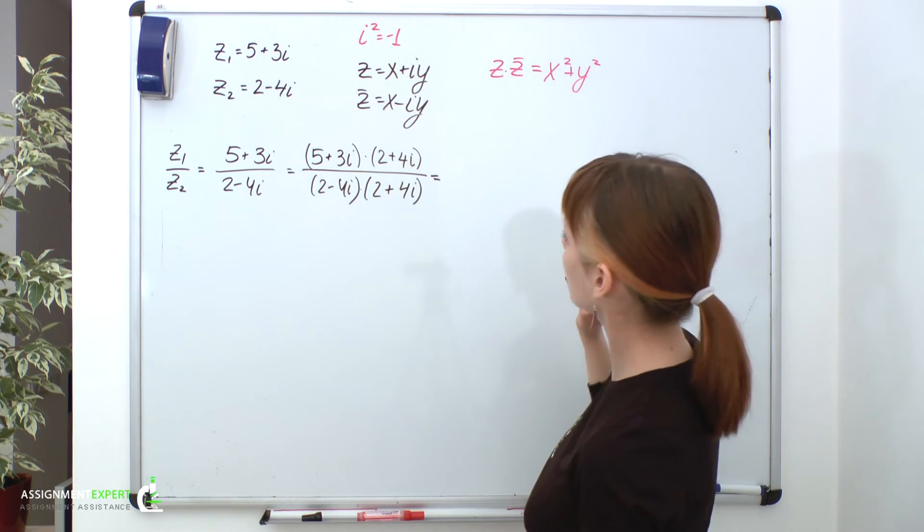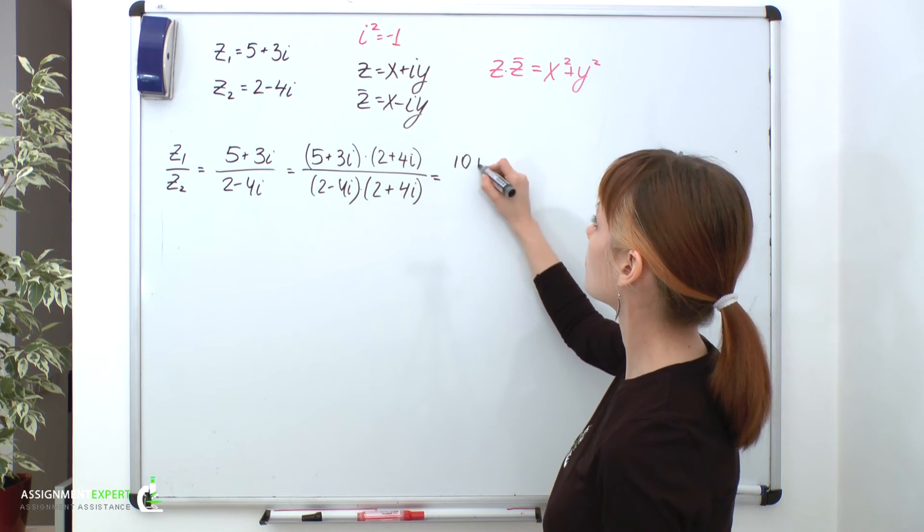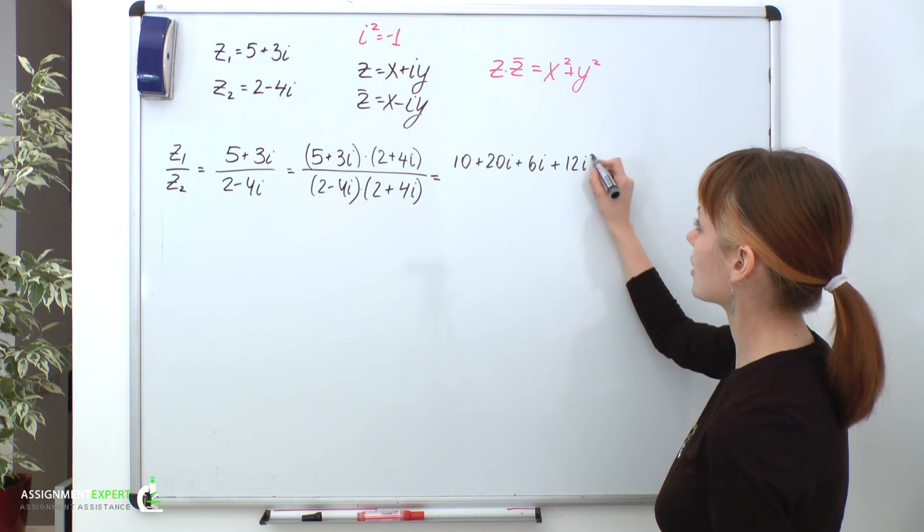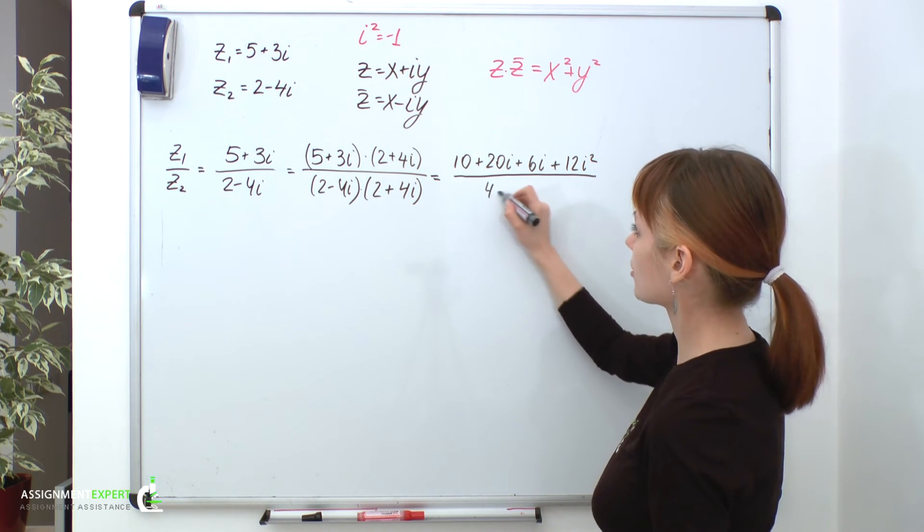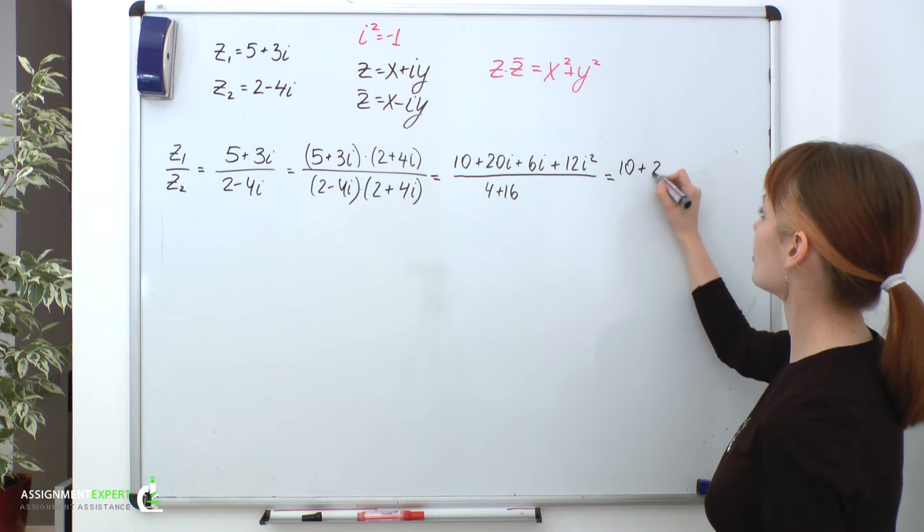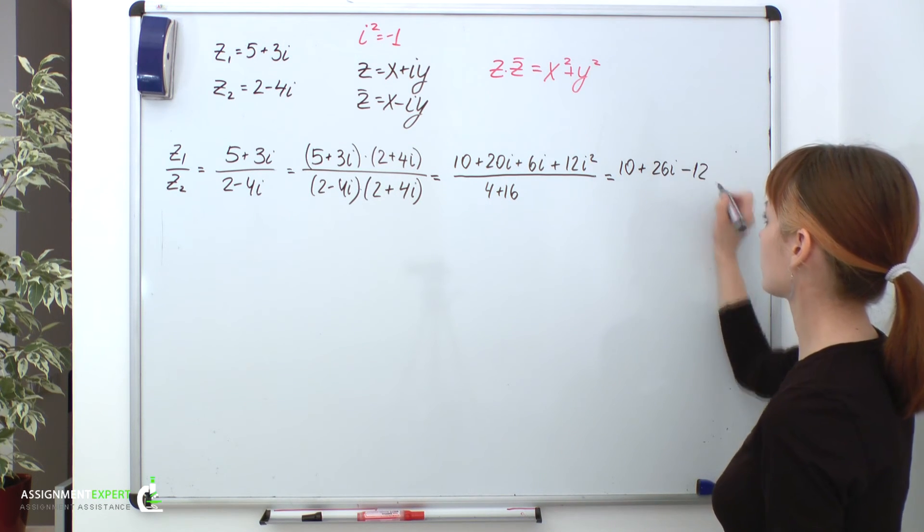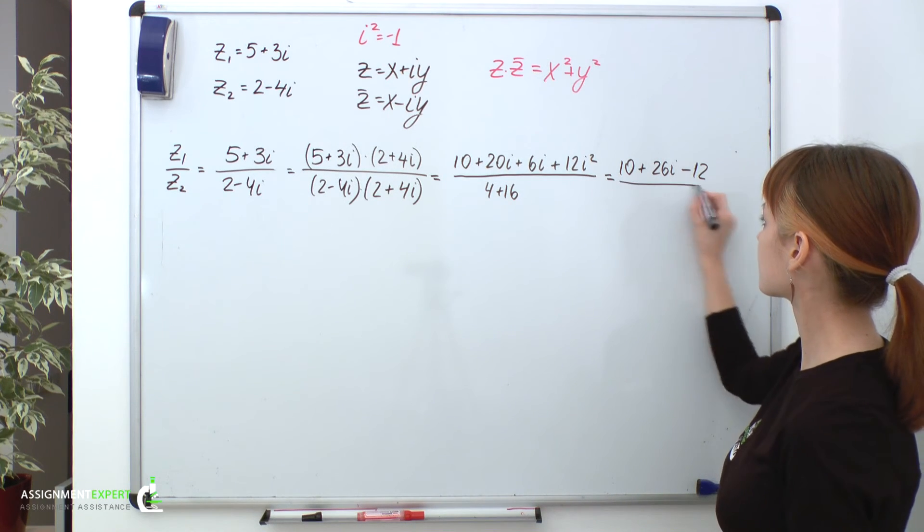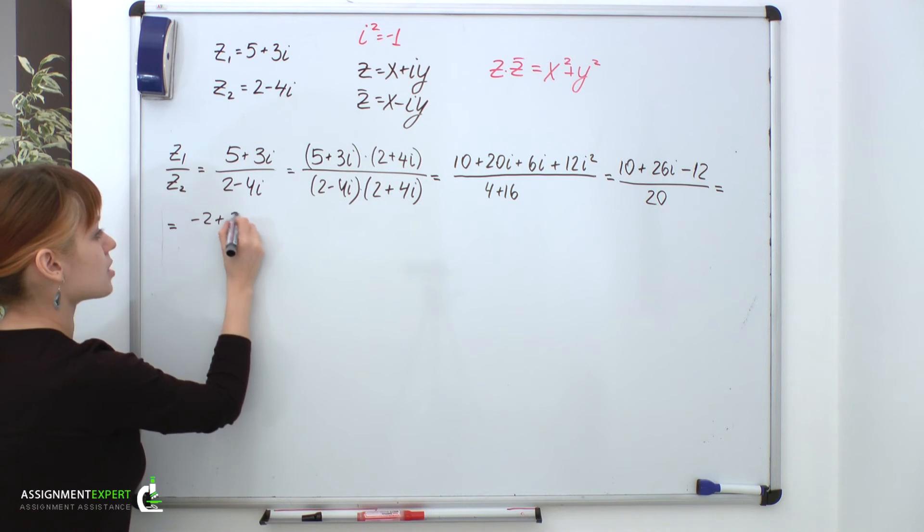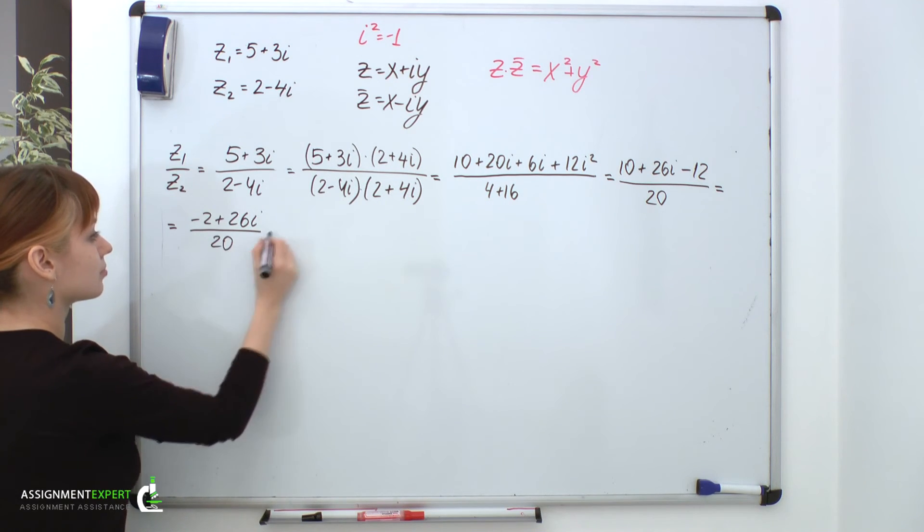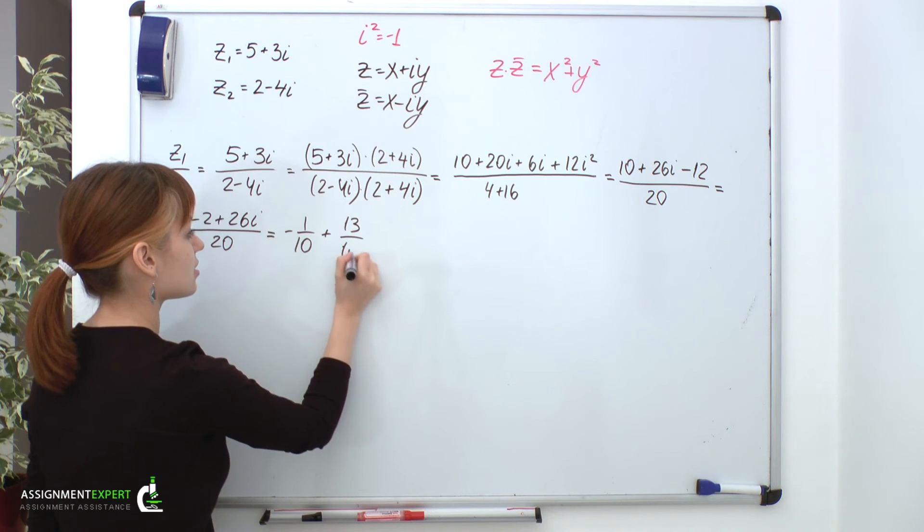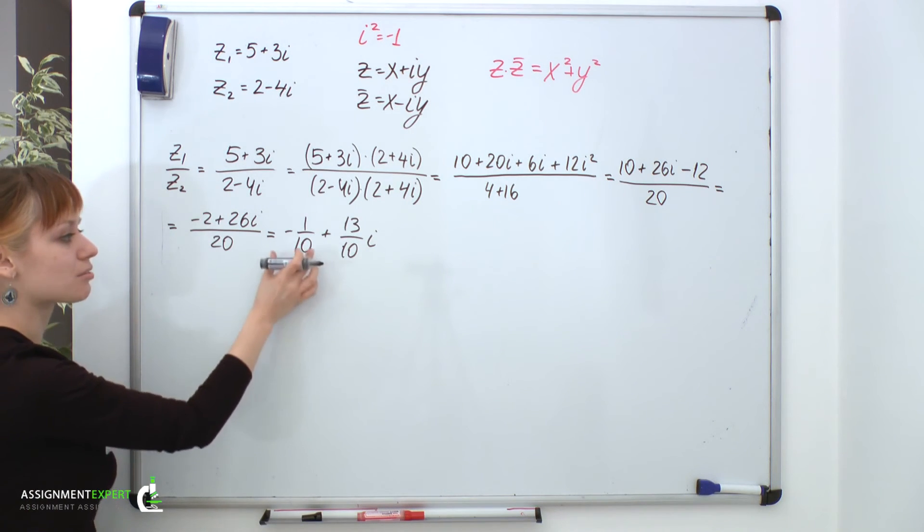Now, we'll have the following: 10 plus 20i plus 6i plus 12i squared over 4 plus 16. Which equals 10 plus 26i minus 12. Since i squared equals negative 1 over 20. Negative 2 plus 26i over 20. And that is equal to negative 1 tenth plus 13 tenths i. And this is our result with obvious real and imaginary parts.